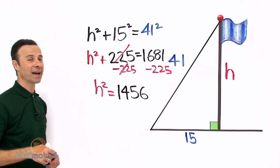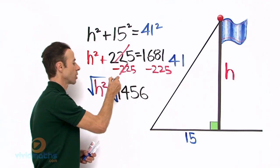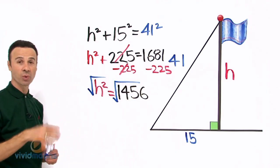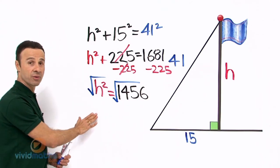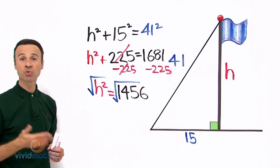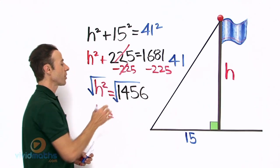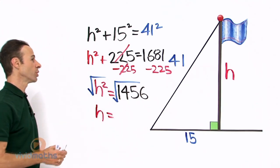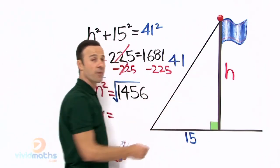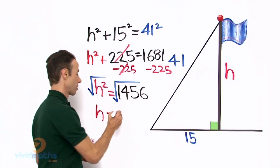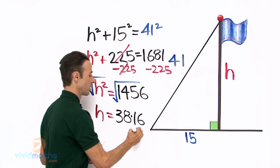Okay, we want to leave H by itself so we need to square root both sides. So let us do that, square root that side, square root that side. Remember what you do to one side you also do to the other side of the equal sign. So the square root of H squared here on the left is H reverting back to itself, just H. Now 1456 square root it will give us a grand total, in other words the height here of the flagpole is 38.16 meters.